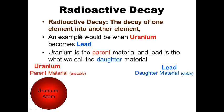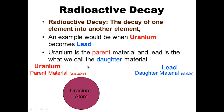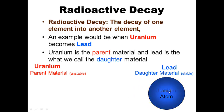Radioactive decay is the decay of one element into another element. An example is when uranium becomes lead. Uranium is called the parent material — it's unstable and doesn't want to stay as uranium, so it decays into the daughter material, which is lead. This uranium atom is the parent material; it's unstable and it decays to the daughter material, lead.